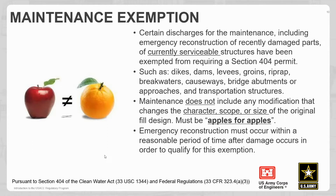Items that often qualify for maintenance exemptions include dikes, dams, levees, groins, riprap, breakwaters, causeways, bridge abutments or approaches, and transportation structures. Particularly after an emergency occurs, this maintenance exemption allows for emergency reconstruction of things like dams, causeways, levees, riprap, and bridge abutments — assuming you're going to put it back how it was before, apples for apples. It cannot go outside of the original fill design.